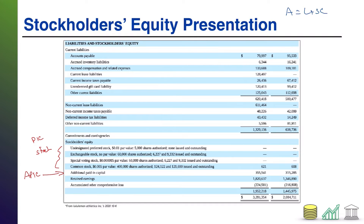Also, in stockholders' equity, you will see the retained earnings of the company. Retained earnings is just the accumulated net income of the company over time. So, every accounting period when the income statement closes, the revenues and expenses are netted together and dumped into the retained earnings account, essentially updating retained earnings to reflect new net income.